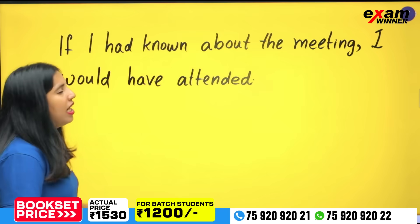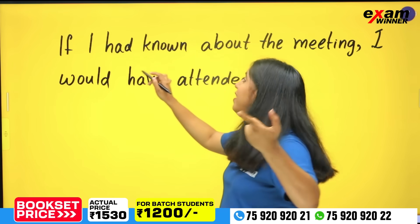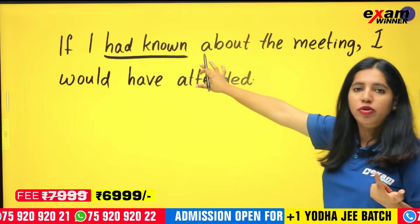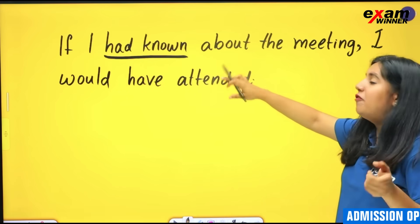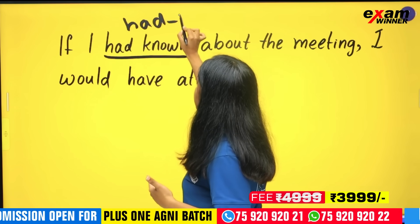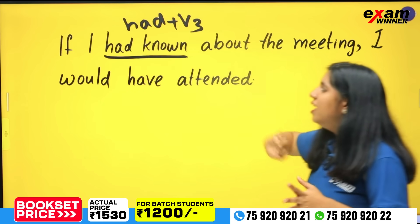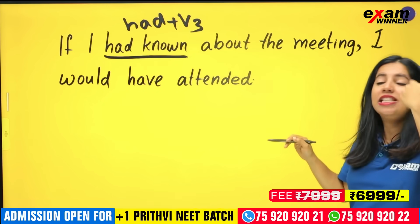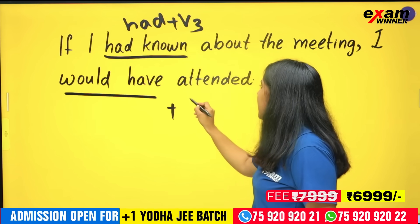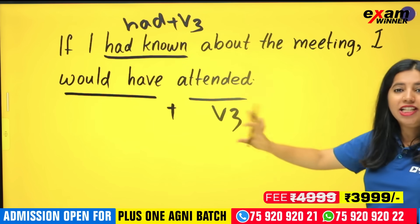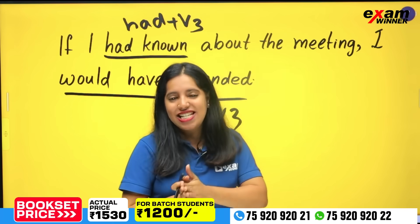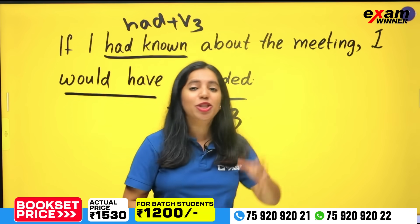Example: If I had known about the meeting — 'had known' is Past Perfect. I would have attended — 'would have + attended' (Past Participle). That is the third conditional.